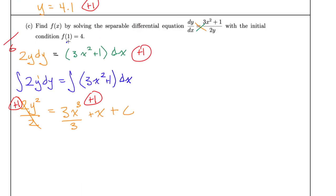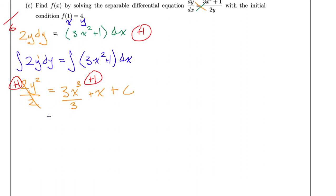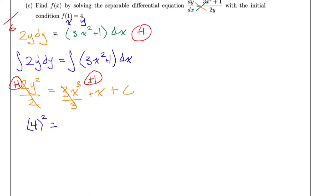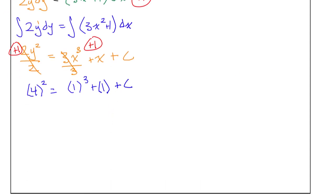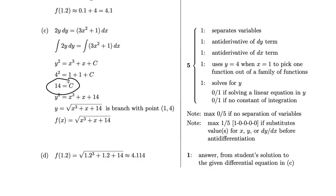Now we do evaluate. Our x-coordinate is again 1, our y-coordinate is again 4. Plugging in: 4 squared equals 1 cubed plus 1 plus c, which gives 16 equals 2 plus c. If you get to this step, give yourself plus 1 — that's the point for using the initial conditions. Therefore c equals 14. You can come over and check your work — yes, c equals 14.